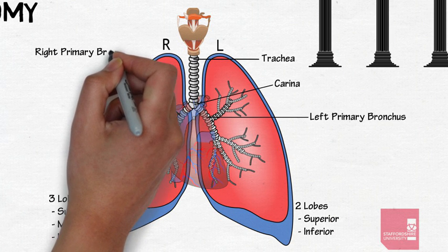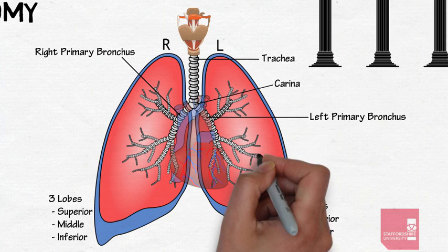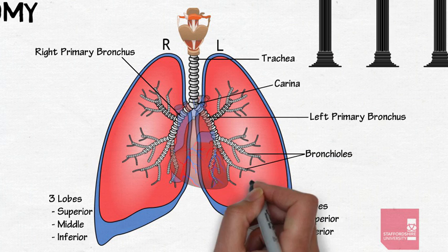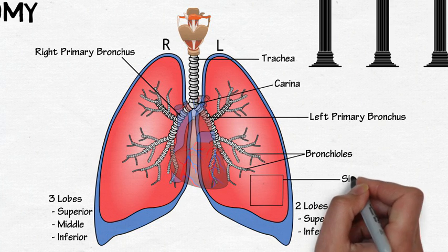These enter the lungs alongside pulmonary arteries and veins and divide again into secondary bronchi and bronchioles. These continue to divide until they reach the site of gas exchange, the alveoli.